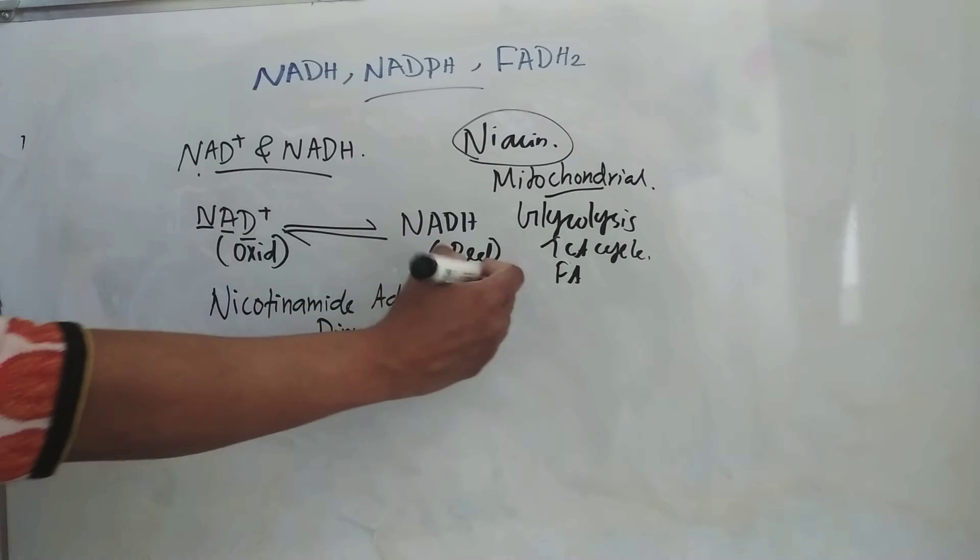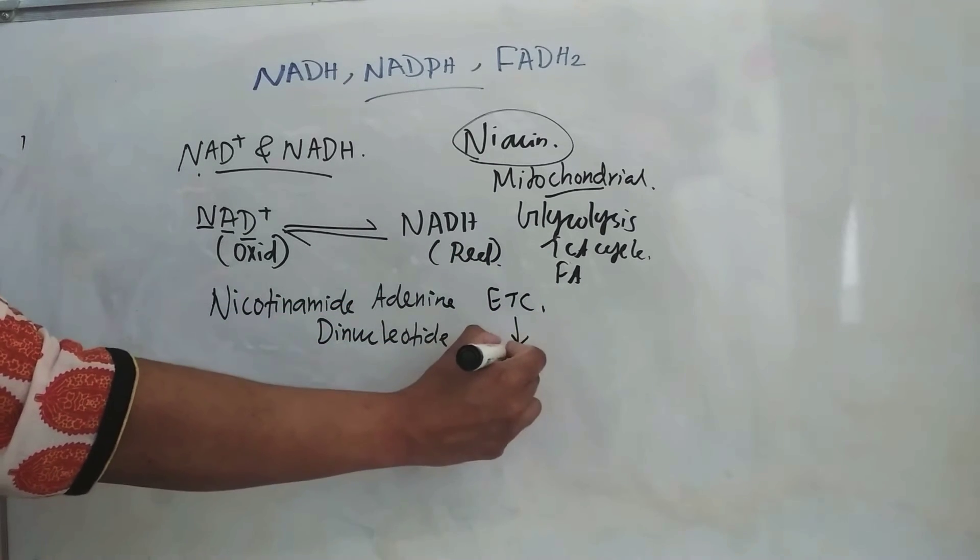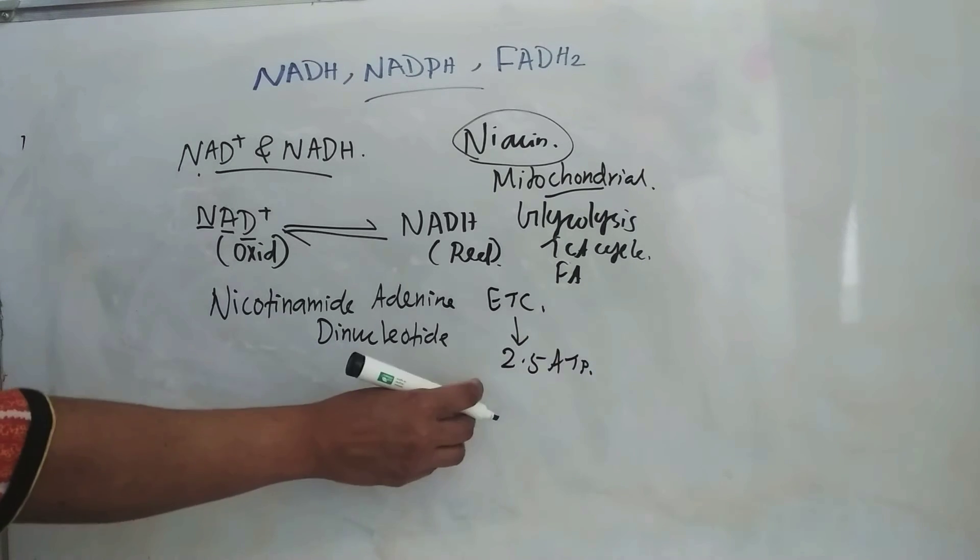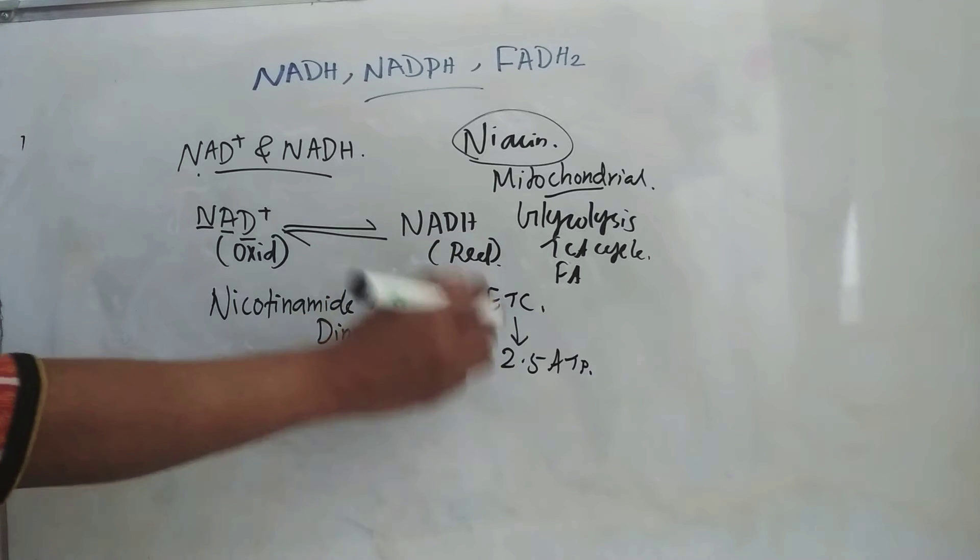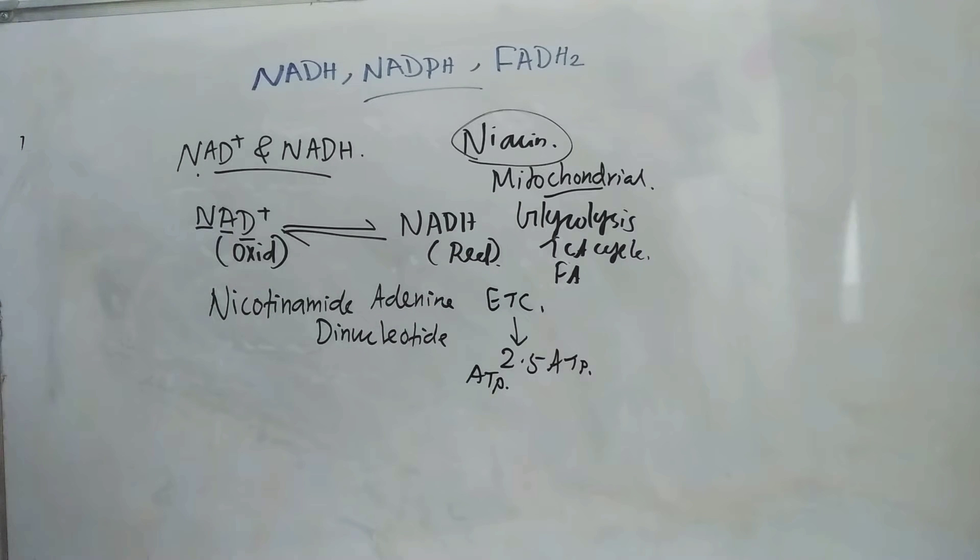Now this NADH will go to electron transport chain and it will give 2.5 ATP. So NADH is meant to produce ATP in oxidative phosphorylation. So that is about NAD plus and NADH.